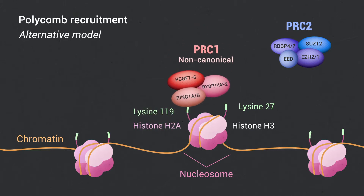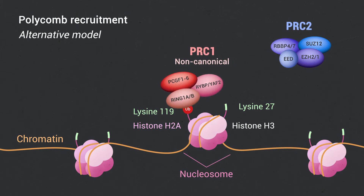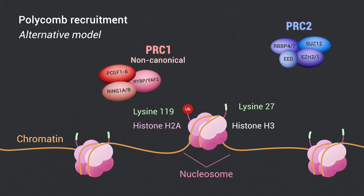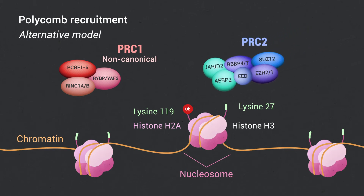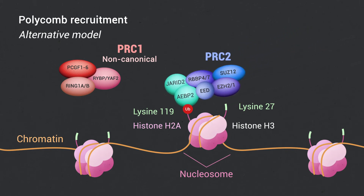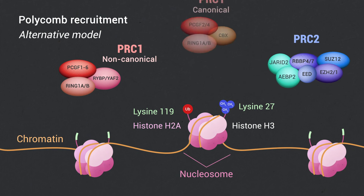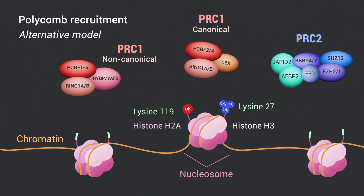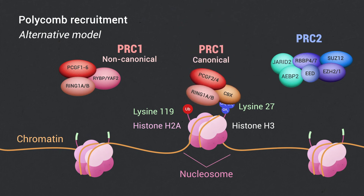recruited on chromatin and ubiquitylates H2A on lysine-119. This mark subsequently recruits the PRC2 complex, followed by trimethylation of H3K27 and recruitment of canonical PRC1.